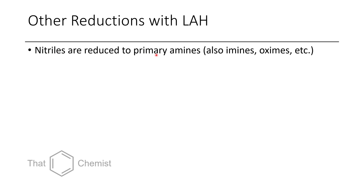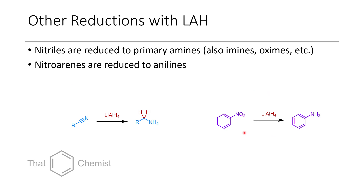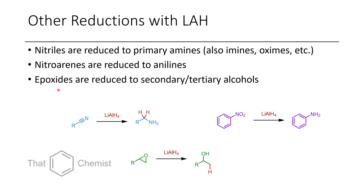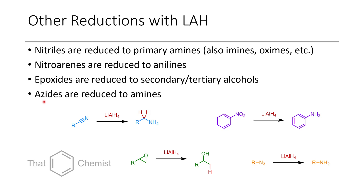Other reductions that can occur with LAH include converting a nitrile to a primary amine. Another possible reaction is the reduction of a nitroarene; however, nitroarenes treated with lithium aluminum hydride tend to form mixtures of several different products, so if you wanted to make an aniline, this wouldn't usually be your best bet — conditions like iron and HCl tend to be more common. You can also reduce an epoxide: where a ketone does a 1,2-reduction, here hydride is delivered to the alpha position. With a more substituted epoxide you'd get a tertiary alcohol. Finally, you can reduce an azide to an amine, where the azide is converted and the protons are given to the alkane upon workup.